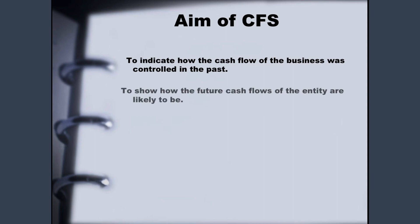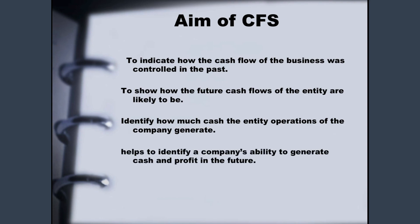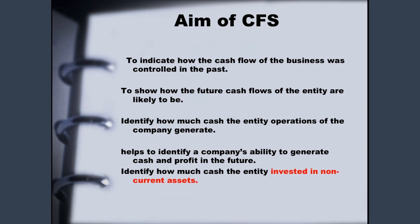The next aim is to show how the future cash flow of the entity will look like, meaning you can predict how the company can make money or increase their capital. The next aim is to identify how much cash the entity generates. Another aim is to help identify a company's ability to generate cash and profit in the near future. The last aim is to identify how much cash the entity invested in non-current assets — and our lesson will pay more attention to this section: investing activity, which falls under non-current assets.